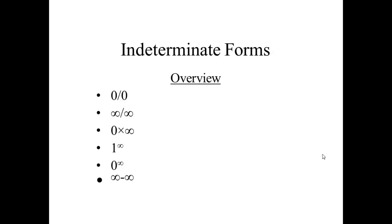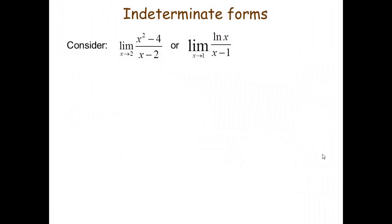You can just differentiate the numerator separately and the denominator separately and substitute the value of x which it tends to, so you will be able to solve the limit. So consider limit x tends to 2 of (x² - 4)/(x - 2), and the second part is limit x tends to 1 of ln(x)/(x - 1).